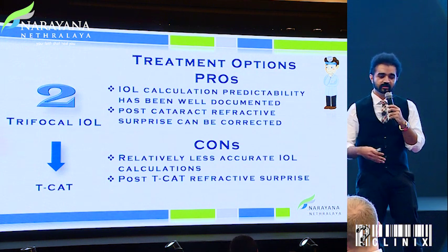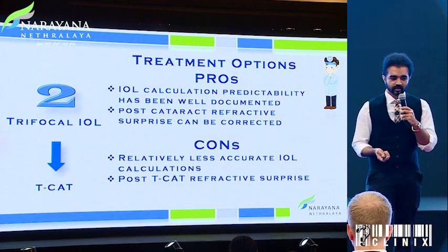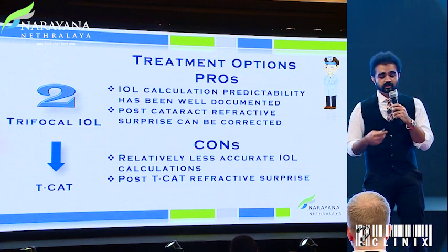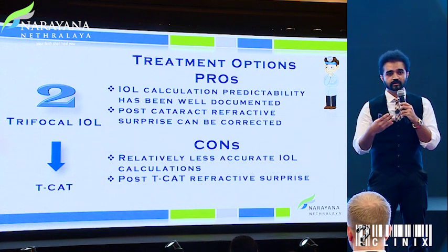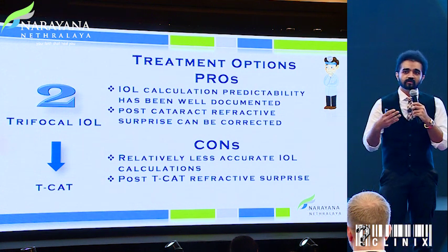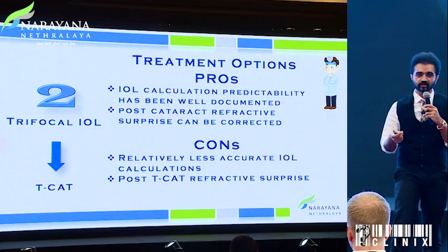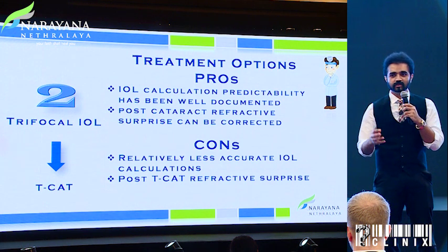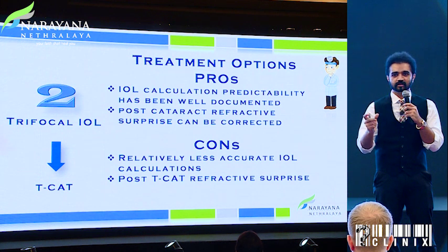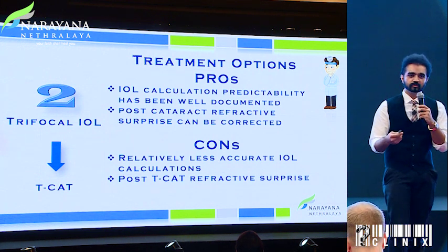The cons of option two: definitely less accurate IOL calculation. When we do the corneal procedure post-IOL, we have to handle all the higher-order aberrations and any refractive surprise. When treating higher-order aberrations, you need to be very selective, and it can be a little unpredictable in terms of refractive change post-surgery.